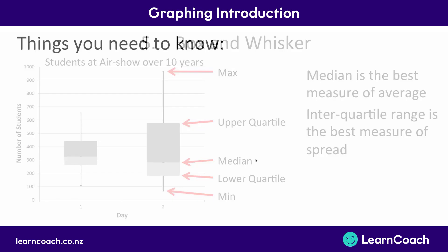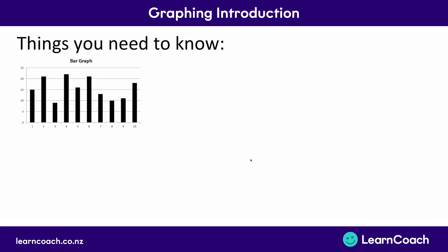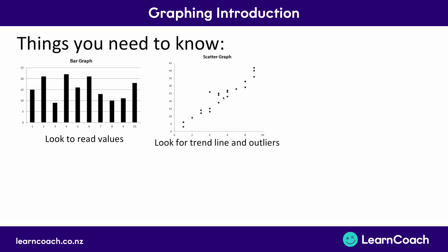So let's look at what you need to know. The first graph was a bar graph or histogram — you just need to read values off it. The second graph was a scatter graph — you need to understand the trend, draw a line of best fit, and look for outliers and groups or clusters of data.